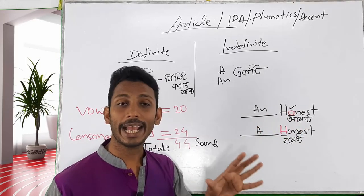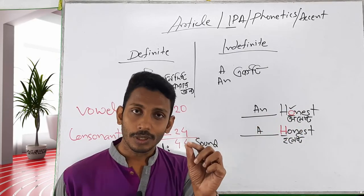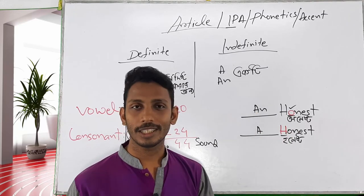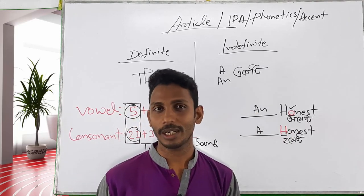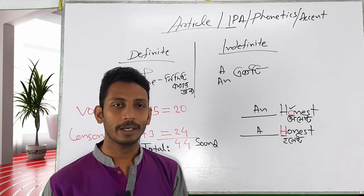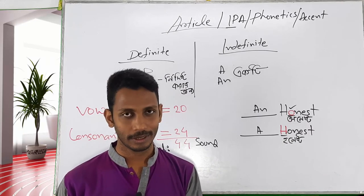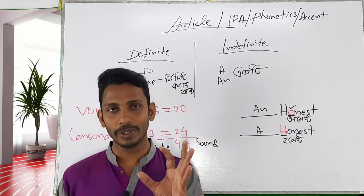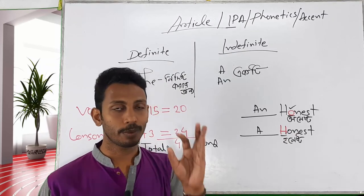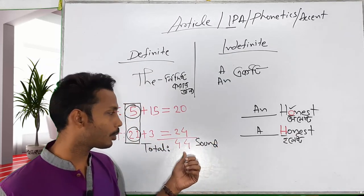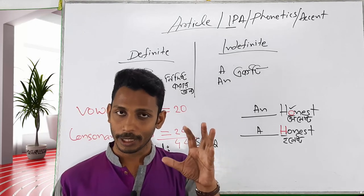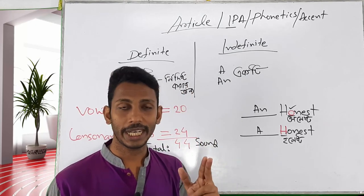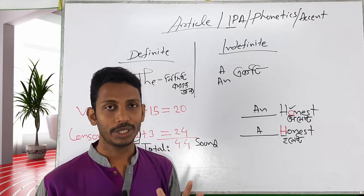The same word can sound different — the sound begins with 'N' or 'S.' So we have learned that articles depend on the sound, not the spelling. Even if the tone or spelling is the same, the sound determines whether we use 'a' or 'an.' The consonant sound requires 'a' and the vowel sound requires 'an.'